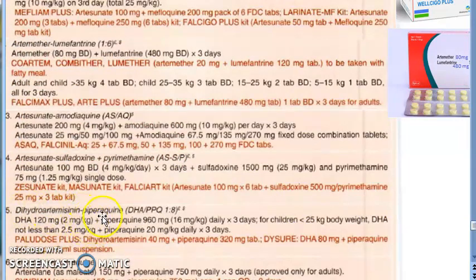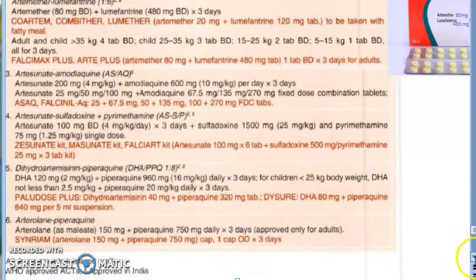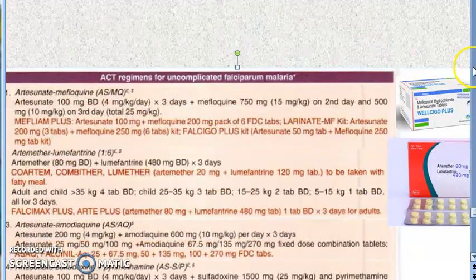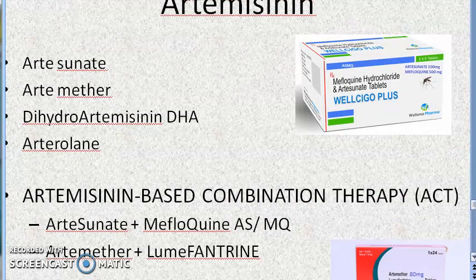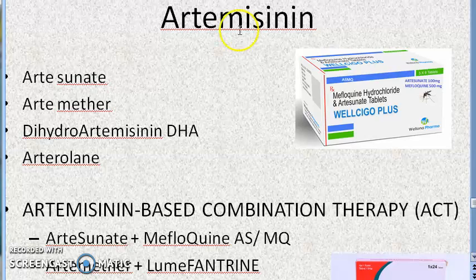Apart from those, other ACT combinations include artesunate plus amodiaquine, artesunate plus sulfadoxine-pyrimethamine, dihydroartemisinin plus piperaquine, and arterolane plus piperaquine. For now, remembering at least the two main regimens — artesunate-mefloquine and artemether-lumefantrine — is sufficient.